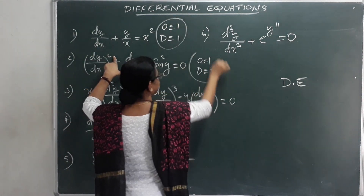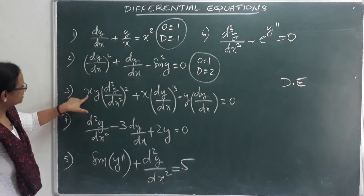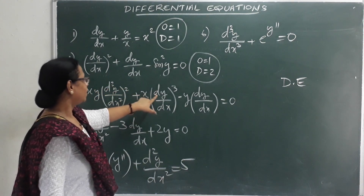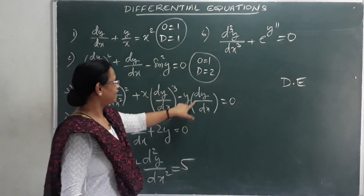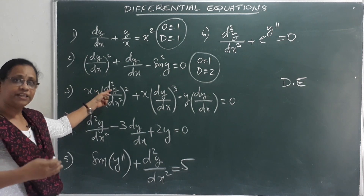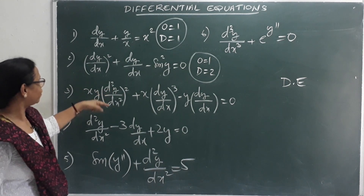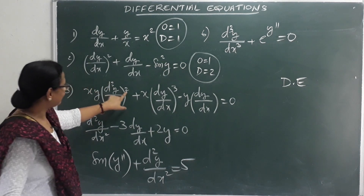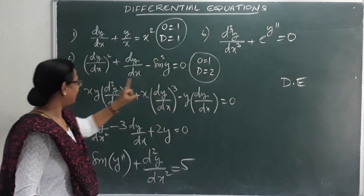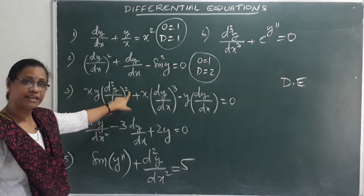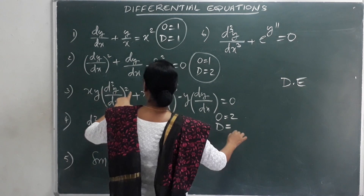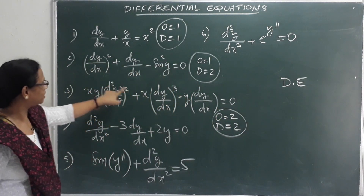The third question is: xy(d²y/dx²)² + x(dy/dx)³ − y(dy/dx) = 0. The highest derivative here is d²y/dx², so the order is 2. The power of d²y/dx² is 2, so the degree is also equal to 2.